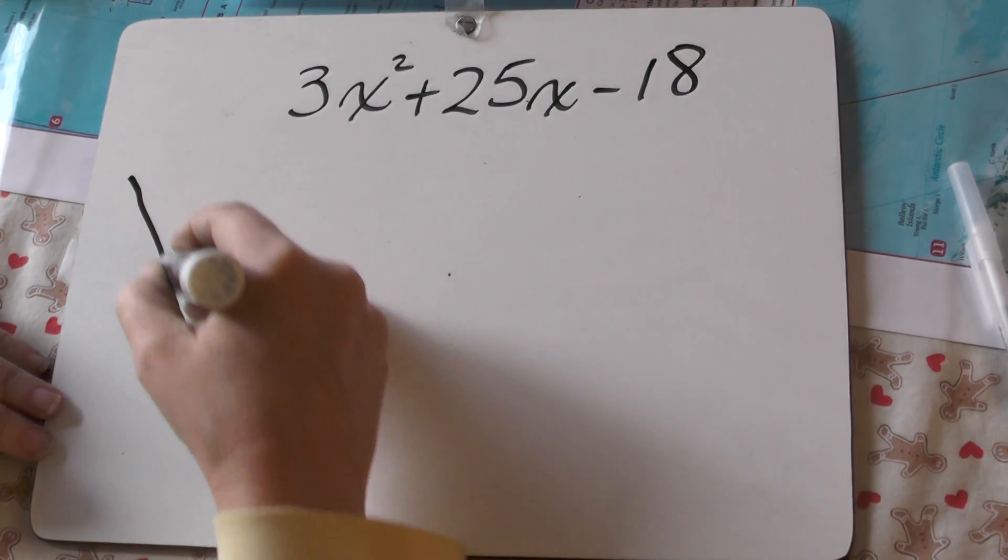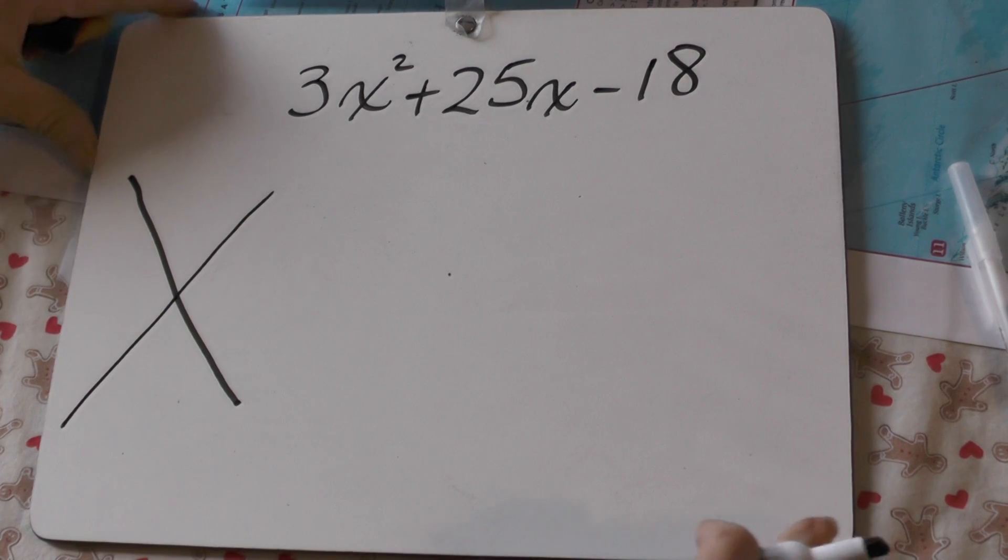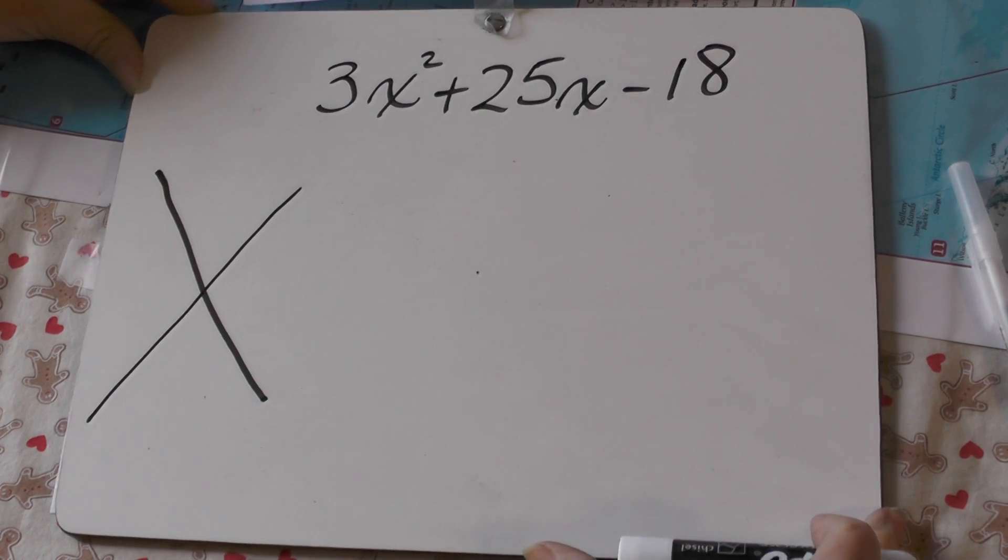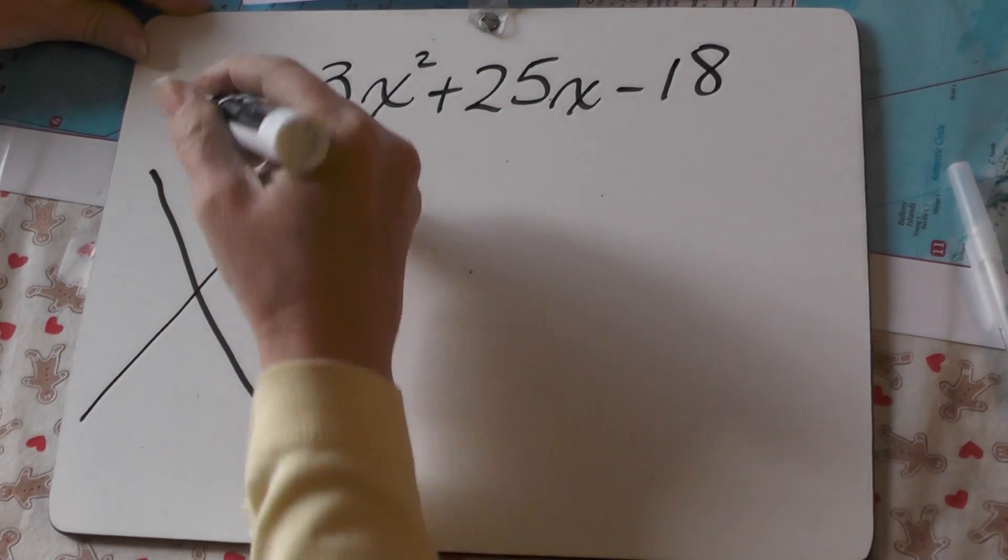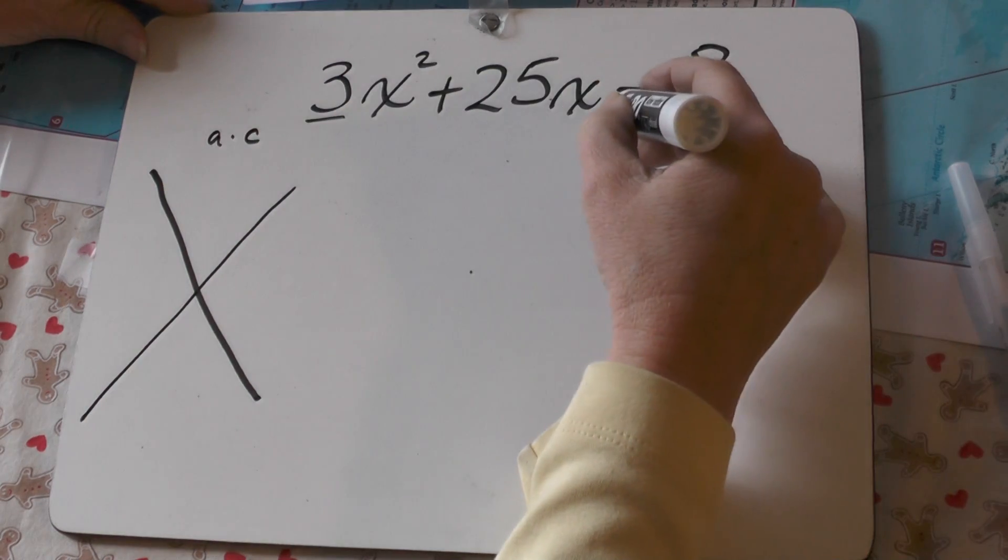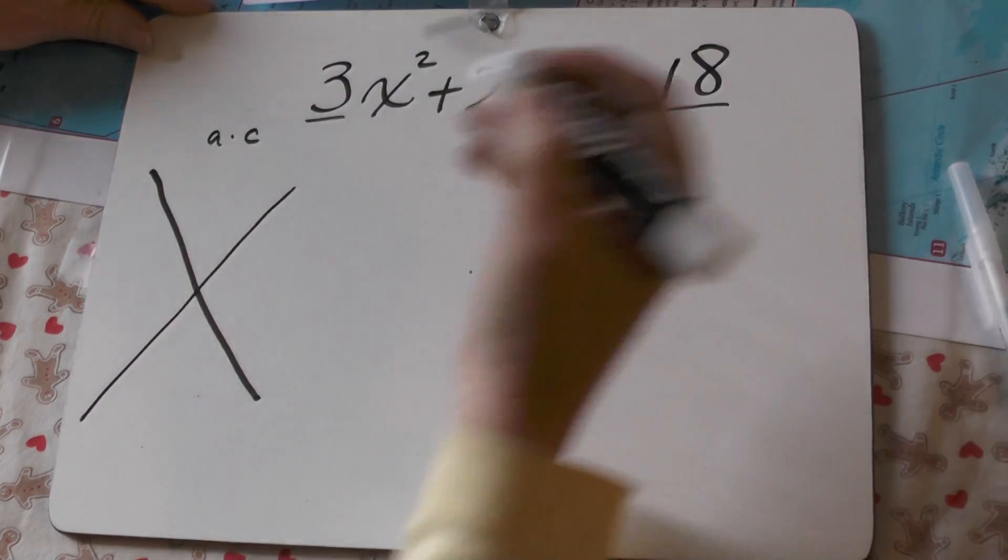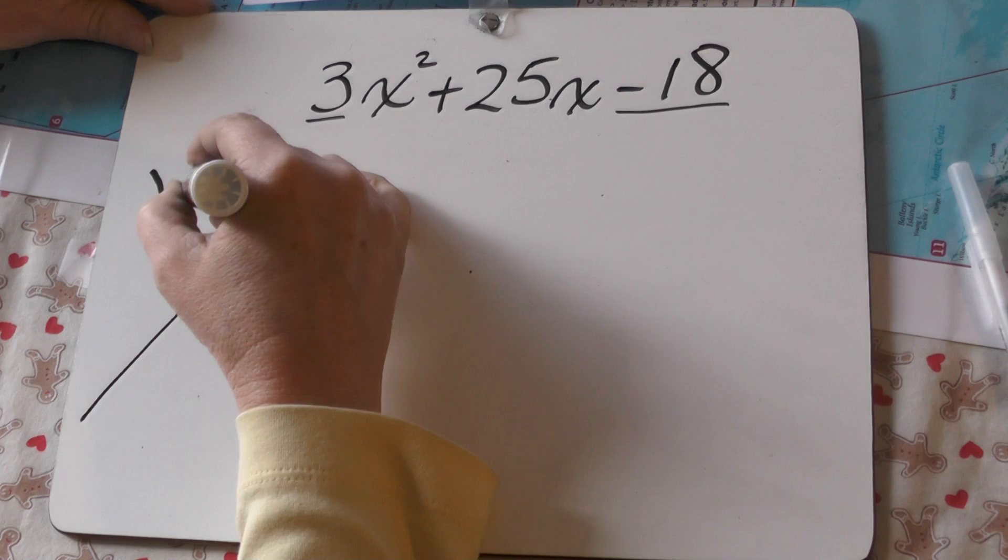Okay, now the first important part of this tool is this little factoring x that you're going to use. You're going to multiply your first coefficient times the last term. Three times negative 18 is negative 54.